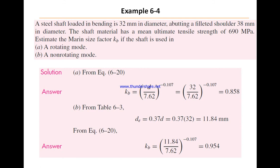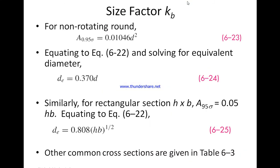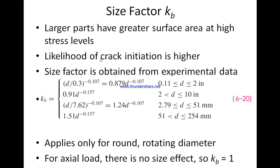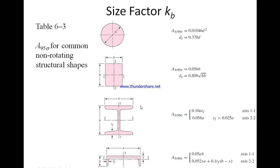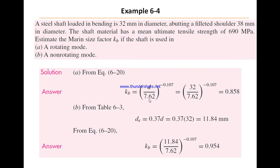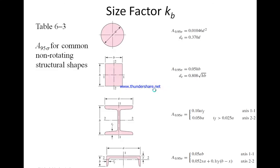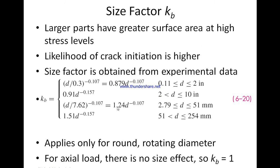Let's go back to the first slide. If it is a rotating mode, we're using the metric units and d is equal to 32. We consider the weakest point, so we use this formula: kb equal (d/7.62)^(-0.107). We put it directly in the equation, kb equal (32/7.62)^(-0.107), which equals 0.858.